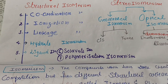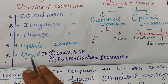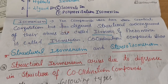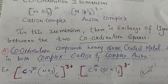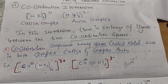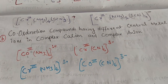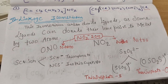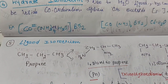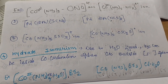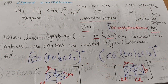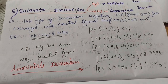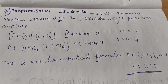In many syllabuses only 3 types of isomerism are given, but here I've also included hydrate isomerism, ligand isomerism, solvate isomerism, and polymerization isomerism. Take a screenshot, complete your notes, write the examples that are easy for you, share with your friends, subscribe to the channel, and thanks for watching.